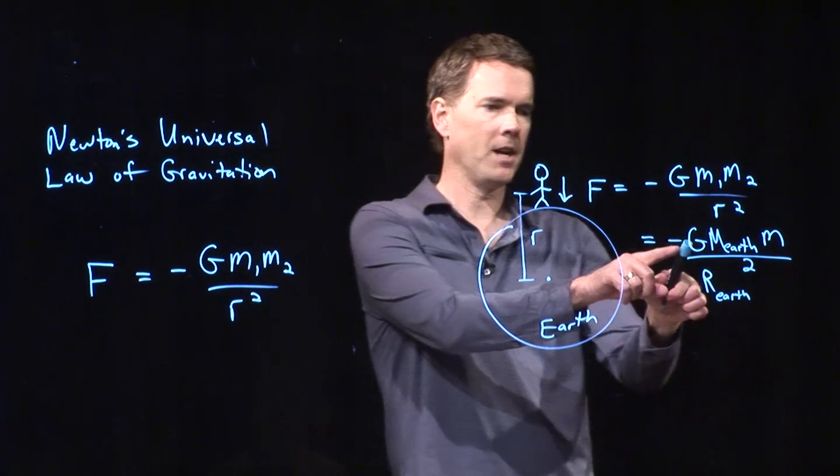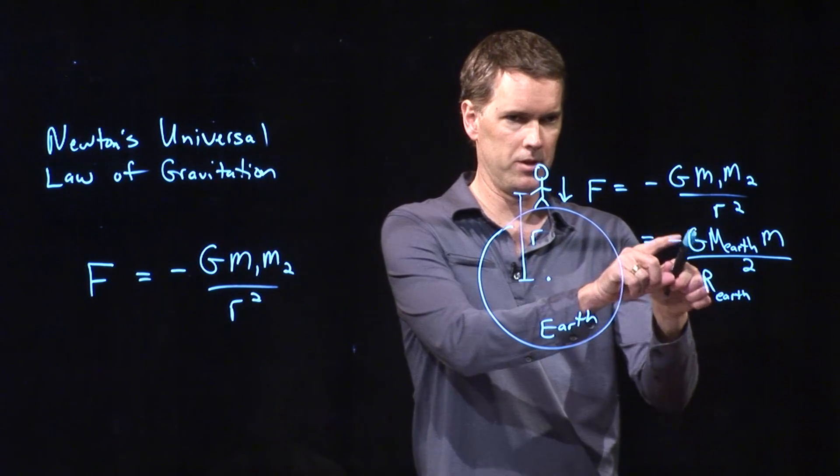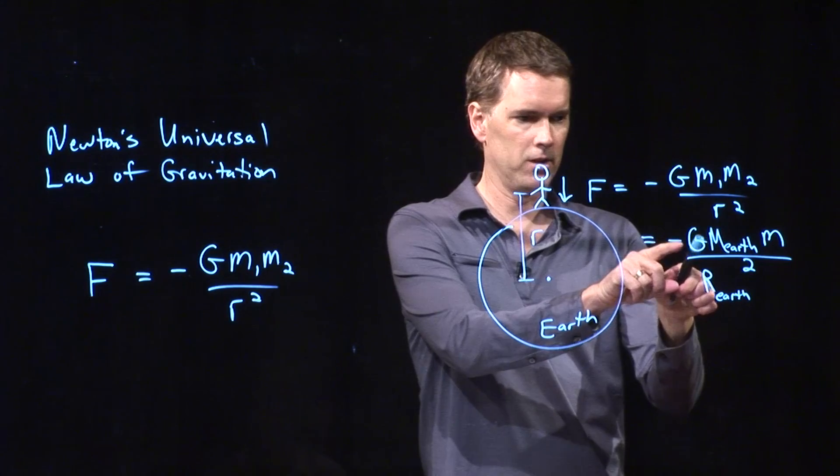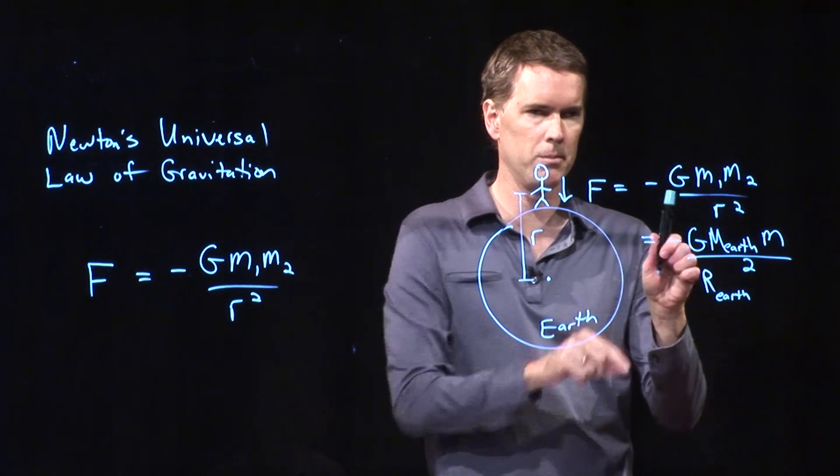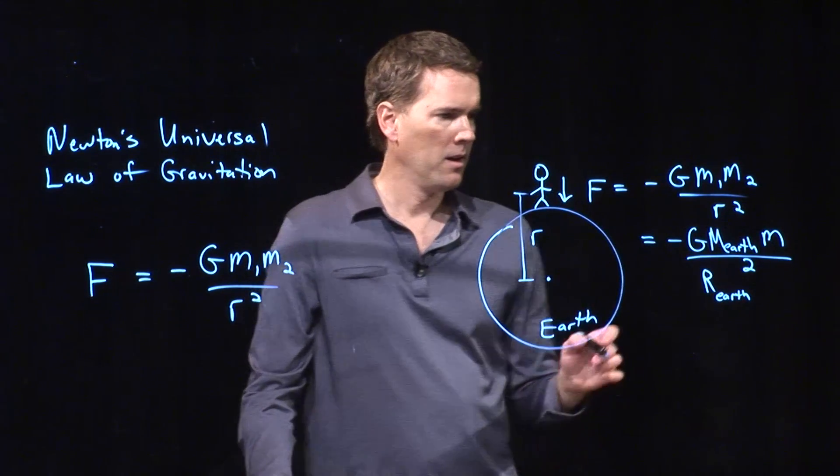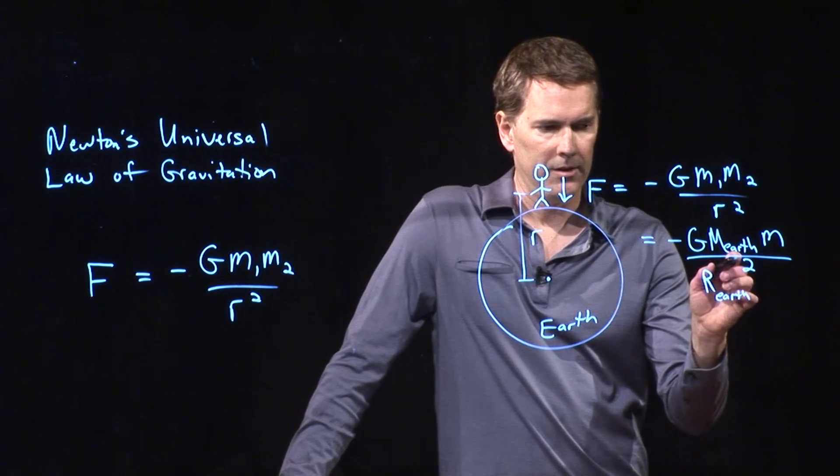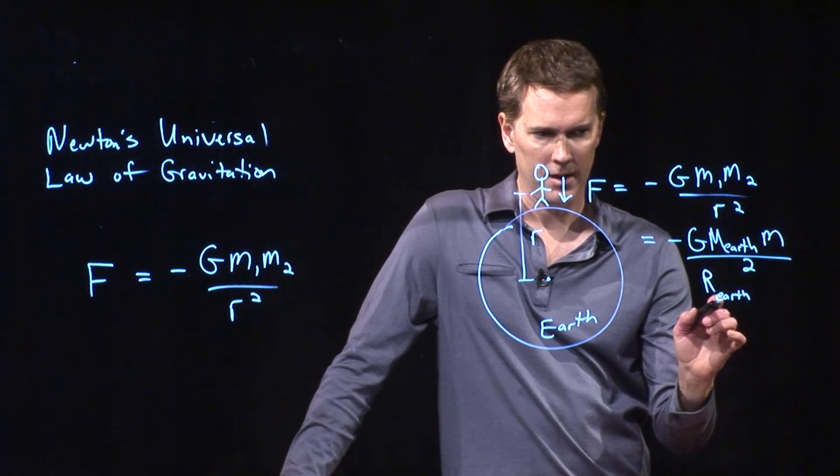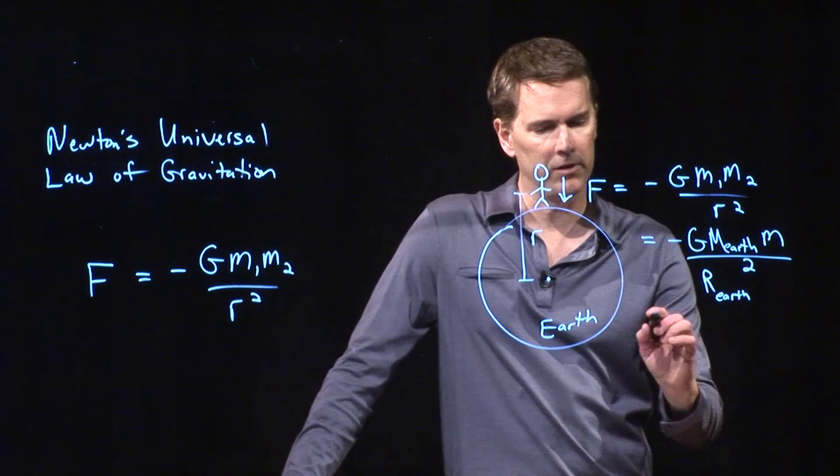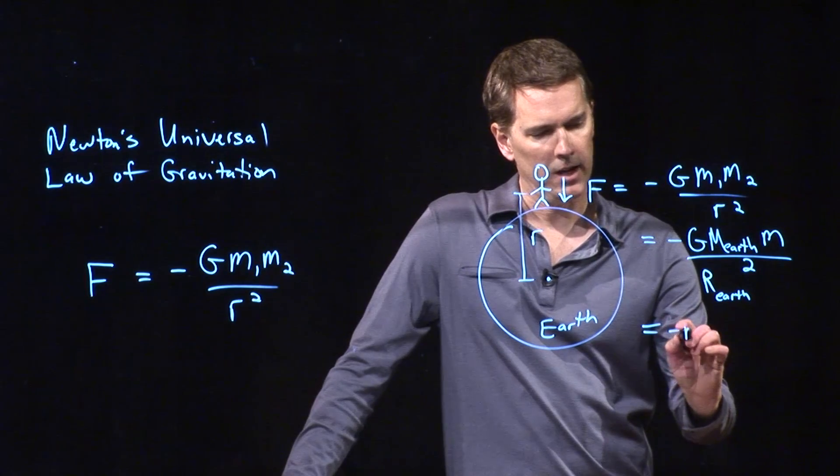G turns out to be a number, a universal number. It's 6.67 times 10 to the minus 11. We know the mass of the Earth. We know the radius of the Earth. And if I plug in all those numbers, guess what I get?